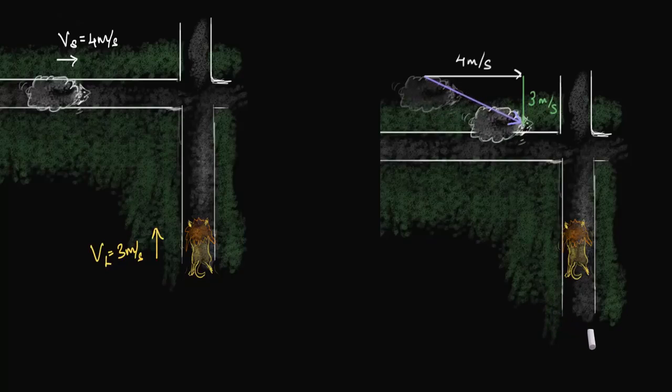Instead, the lion would see the sheep moving this way, this direction. That is the direction of the velocity of the sheep. At first, it might sound a little weird, but let's play an animation to really convince you that that's really what's happening.